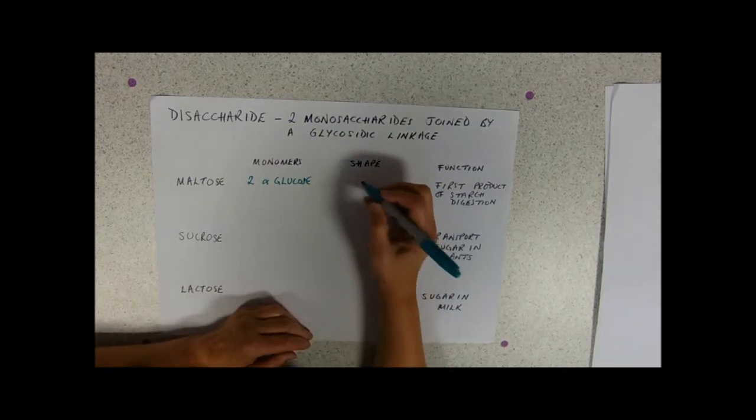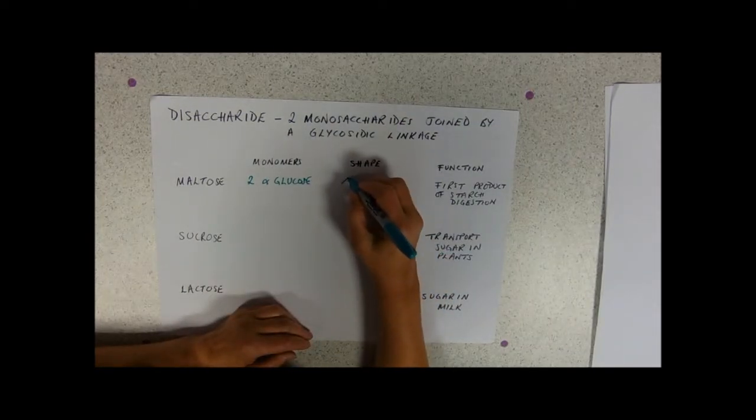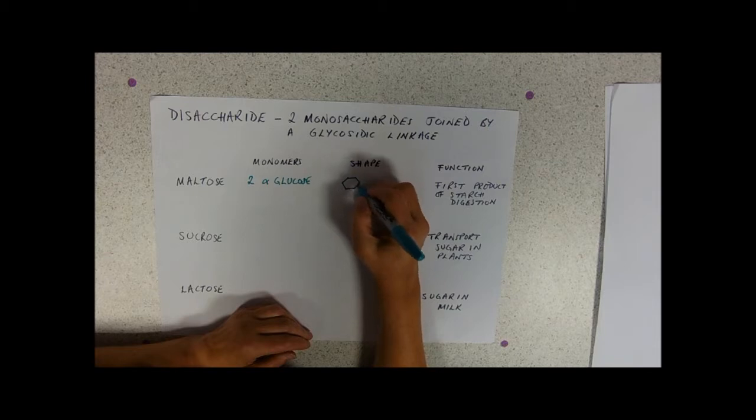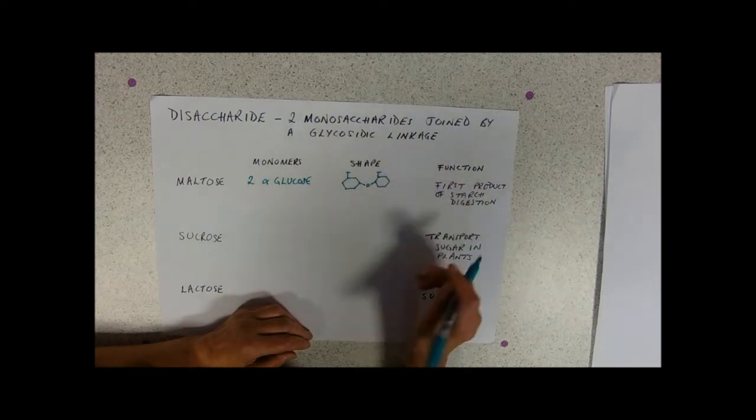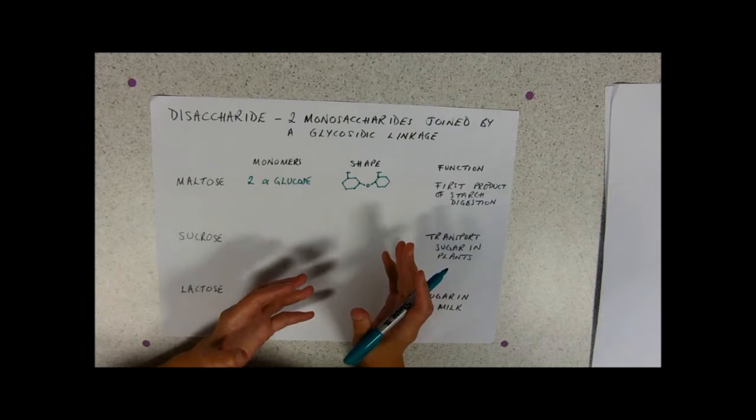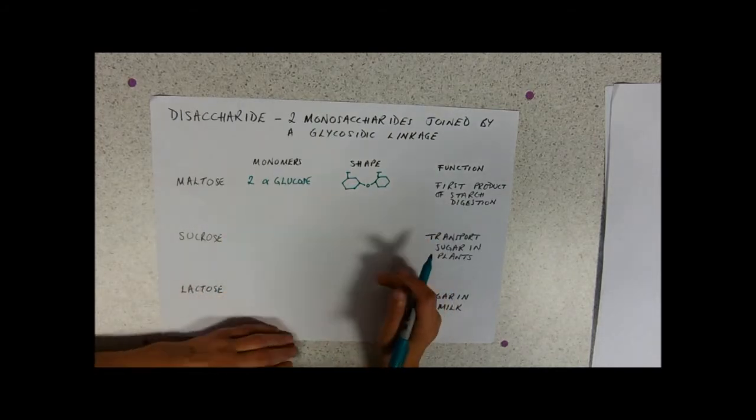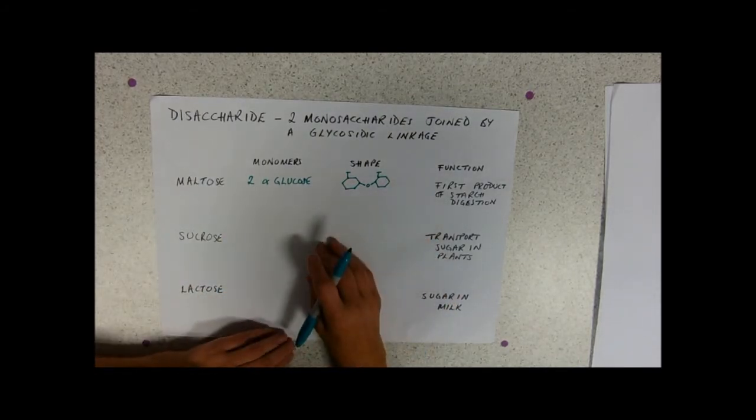Alpha glucose is a hexagon joined by a bond to another hexagon. If you see two hexagons joined together, the chances are it's maltose.